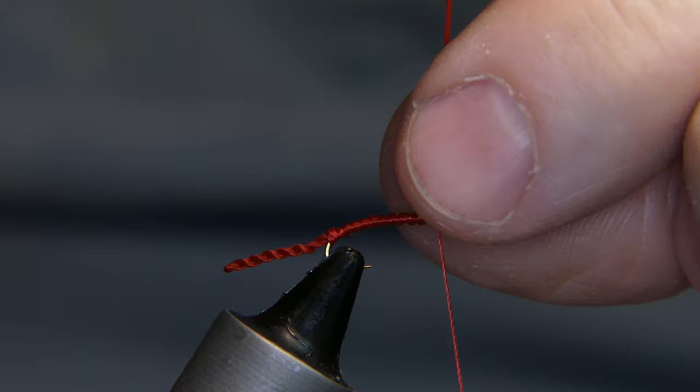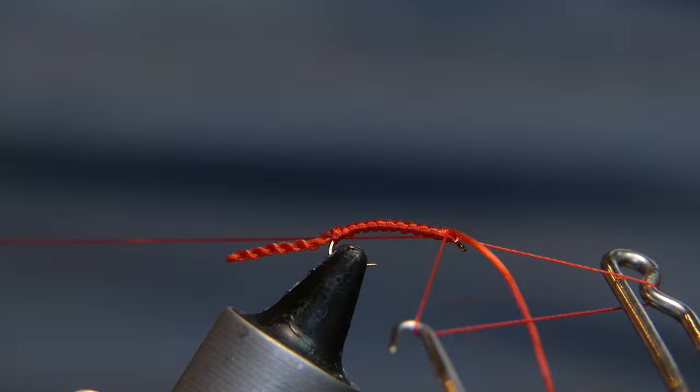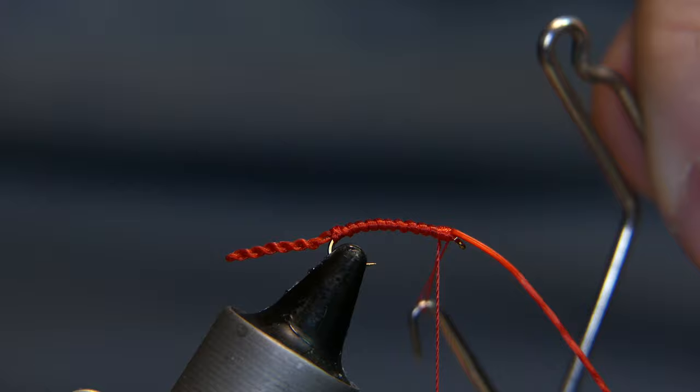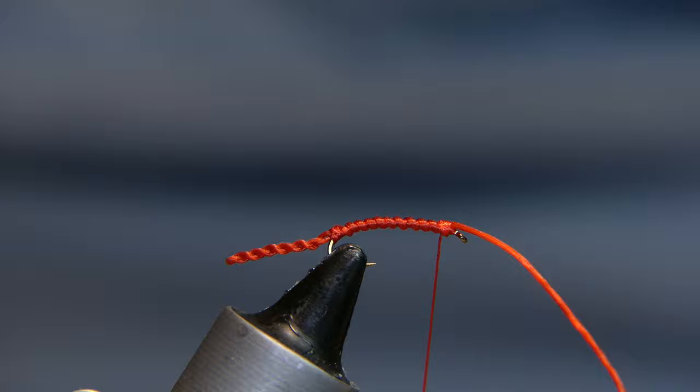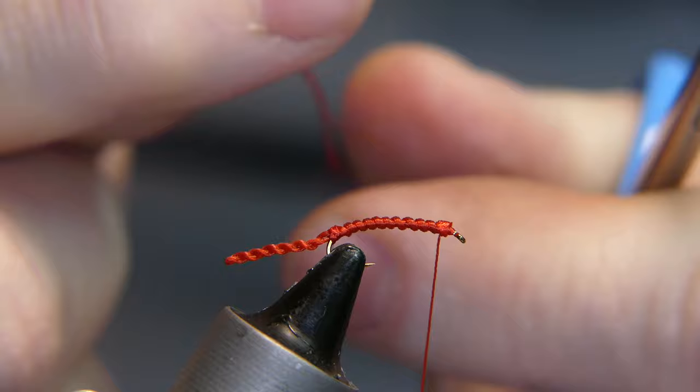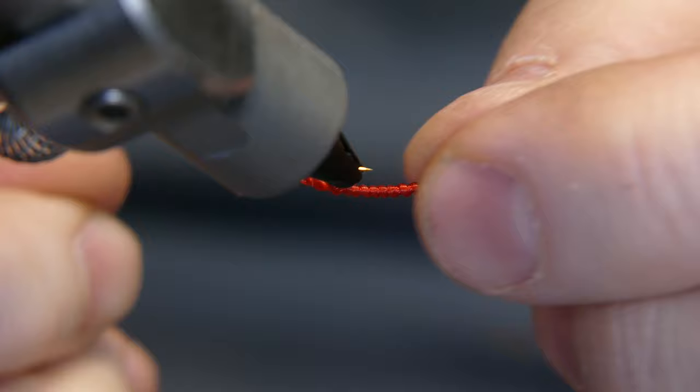Take your whip finish tool. Before you cut that off, give it a whip. One, two, three. Don't get that caught in there. Pull it tight. Now you can go ahead and cut it away there. I find if I cut it away before I whip it, it sometimes gets away from me. You don't want that happening. That's enough for another fly there. Save it. Cut away your thread. Now you got yourself a little bloodworm.